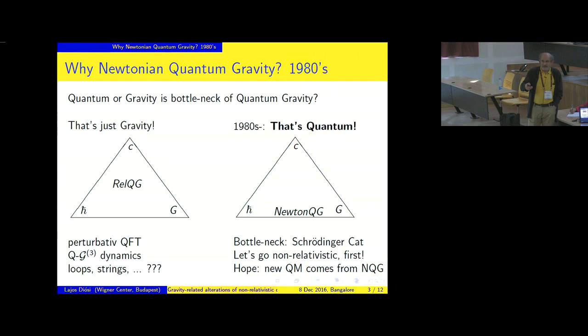But after the 1980s, some people recognized that it may be, or even must be, quantum which is the bottleneck. Then we must turn toward issues of quantum mechanics, namely Schrodinger-Cat, the existence of Schrodinger-Cat and the problematic theory of quantum measurement and wave function collapse.